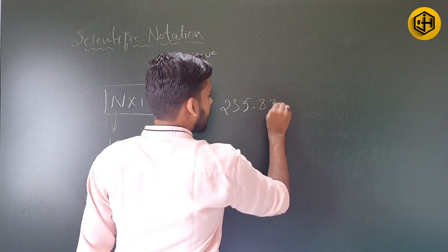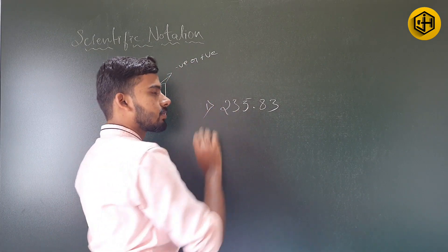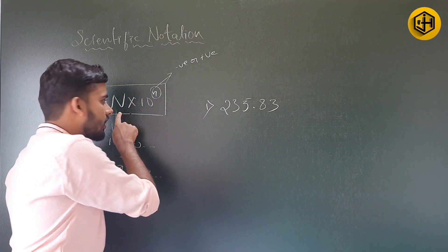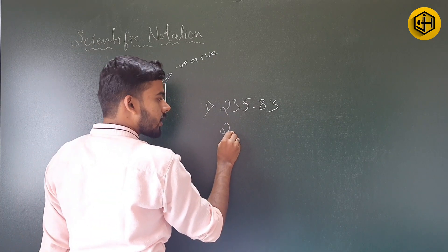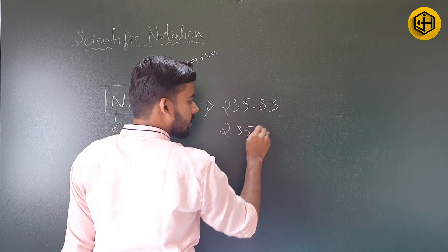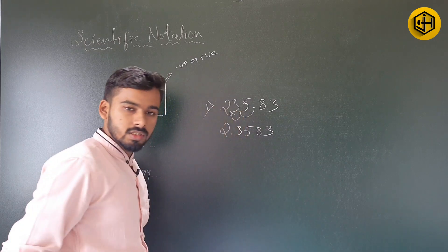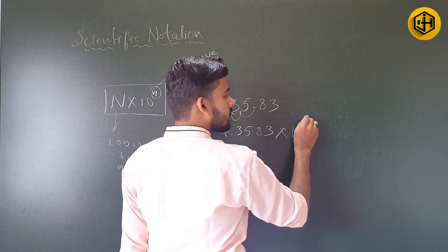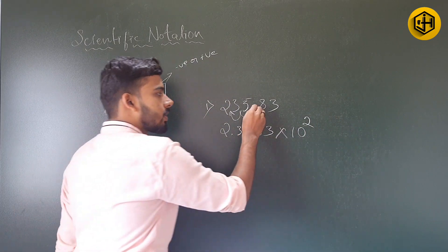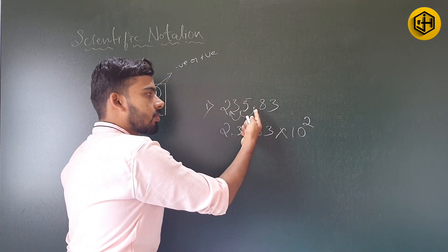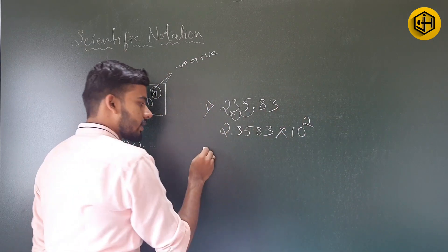For example, express 235.83 in scientific notation. We write it in the form N × 10^n, where only one digit appears before the decimal. So the scientific notation is 2.3583 × 10^2, because the decimal point has moved 2 places to the left side. Since the decimal point moved to the left, we use a positive exponent: 10^2.